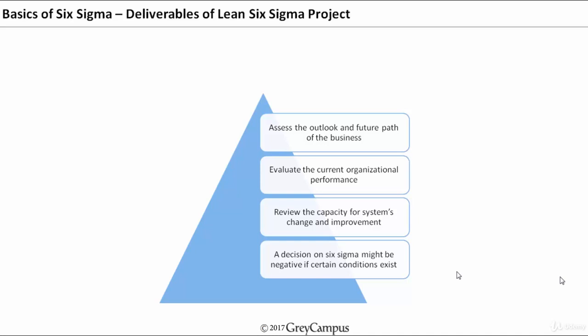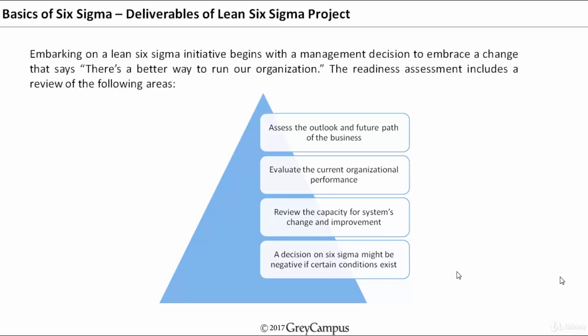How far the entire system — including the people, process, and technology — how far they are inclined towards changes and improvements? Because a decision on Six Sigma will be negative if certain conditions do not exist. If the right mindset of the people is not there, then implementation of Six Sigma will be very difficult.